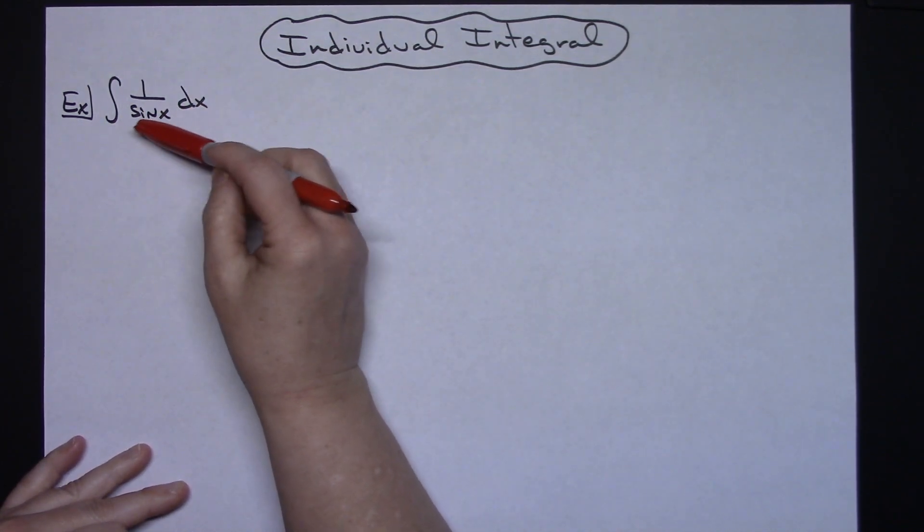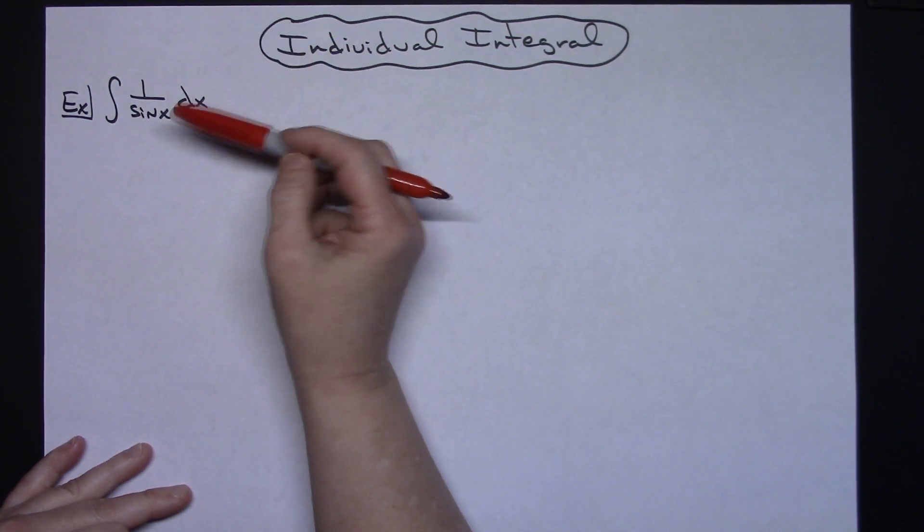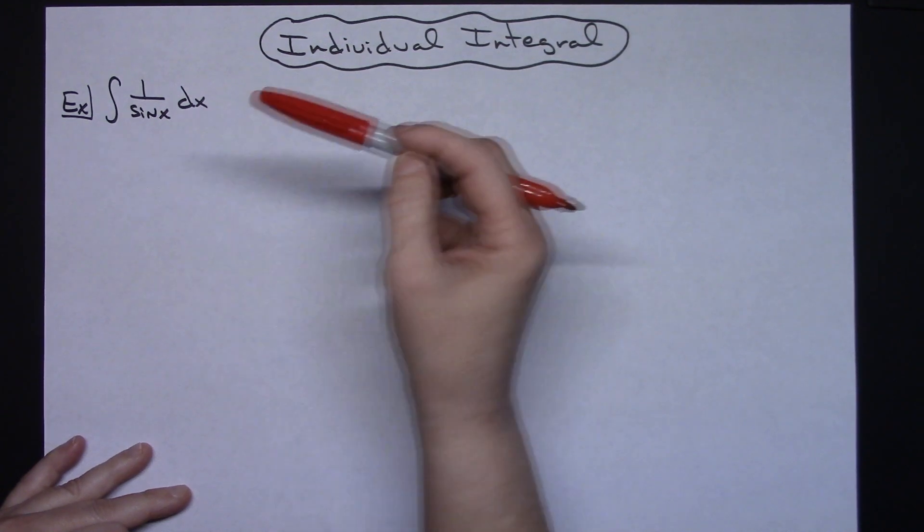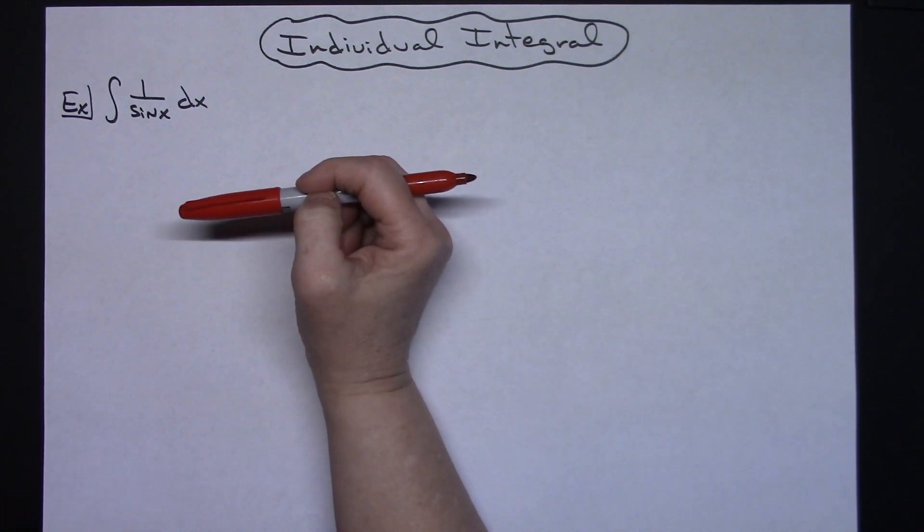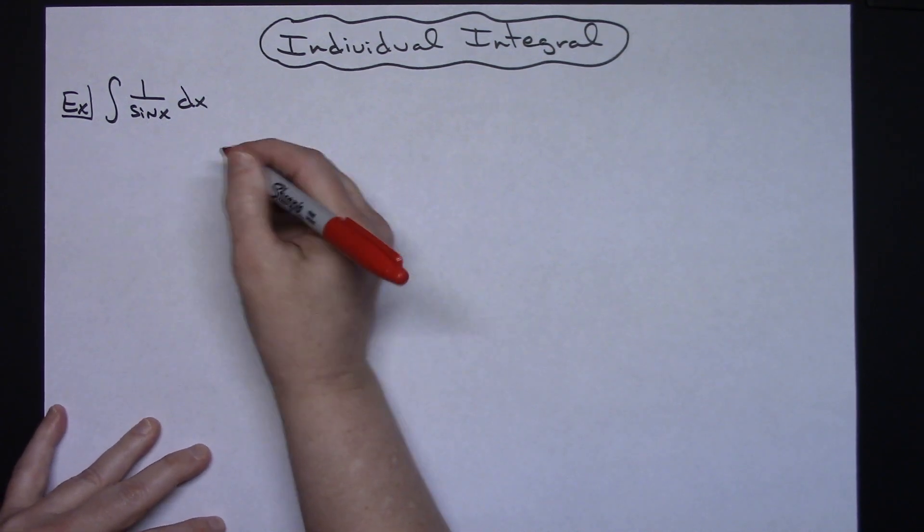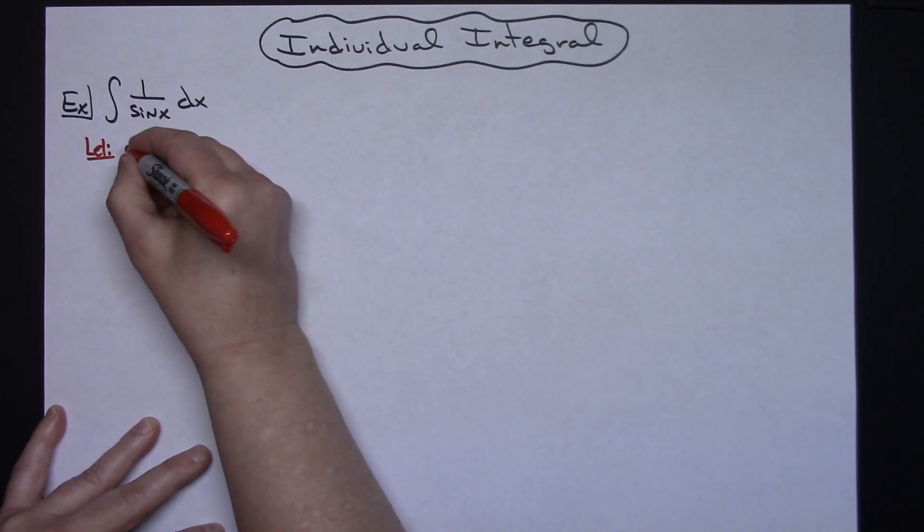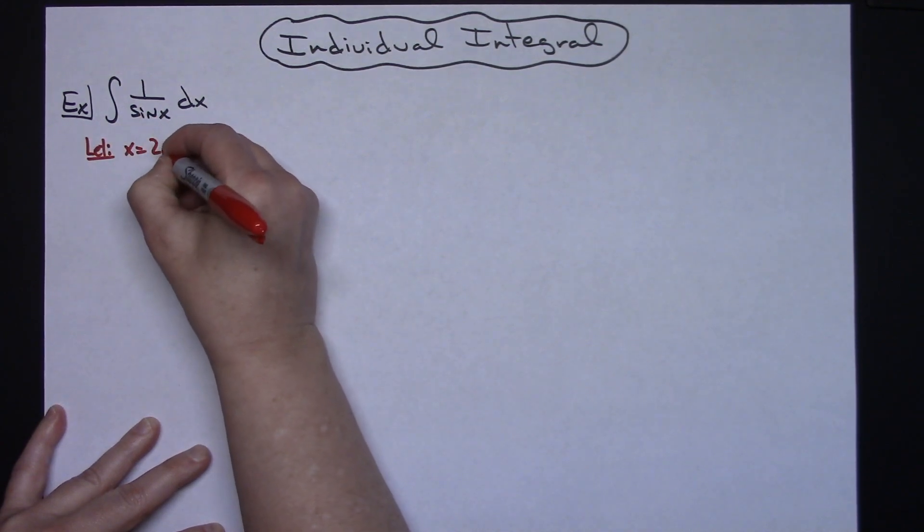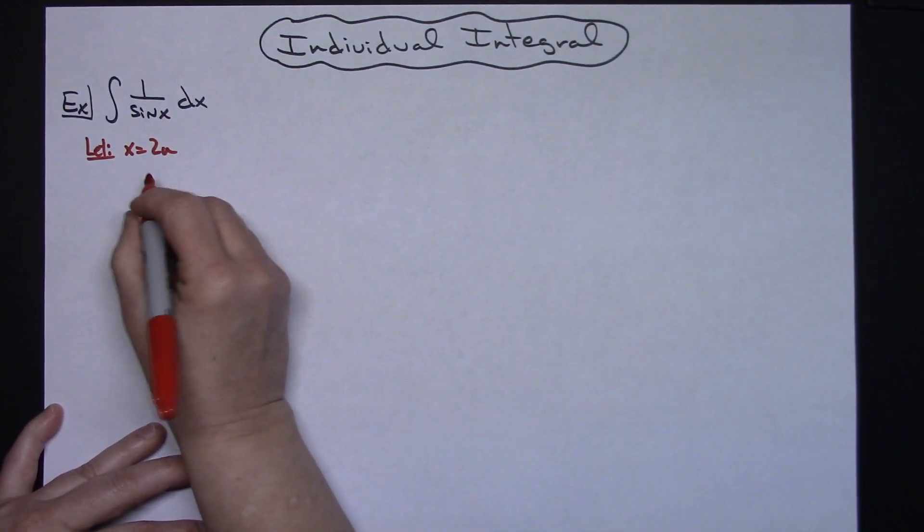Now to start with I'm going to take a look at that denominator. I've got sine x. There's not a lot I can do when it's sine x. I can do a lot more with it if I had like say a sine of 2u. If I had a 2 in front of that then I could use some double angle formulas. So I'm going to set this up so that I can use those double angle formulas. I'm going to start by letting my x equal 2u. When I do that then I'll have a sine of 2u then I can do some double angle substitutions.